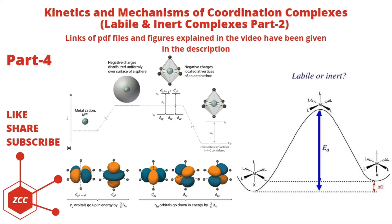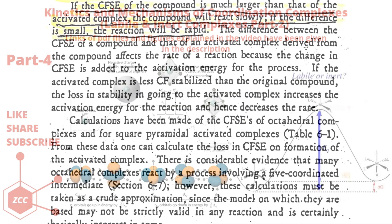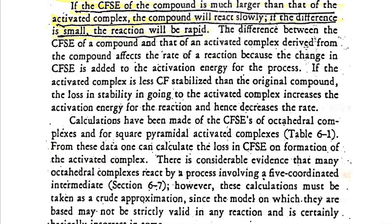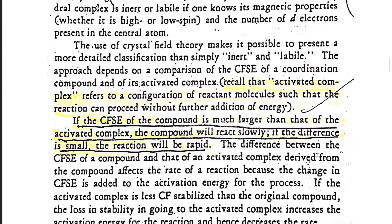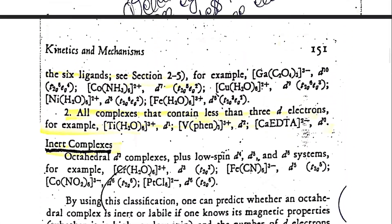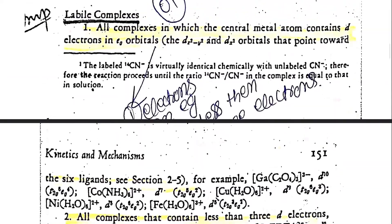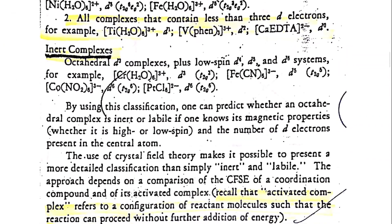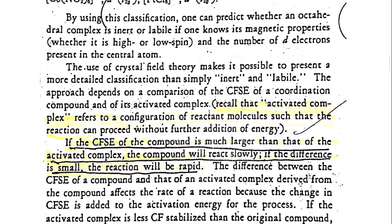Today's lecture is about labile and inert complexes and this is Part 2 of this lecture. In the previous lecture we discussed the lability and inertness of complexes and we classified the complexes on the basis of the presence of electrons in the Eg and t2g set of orbitals.